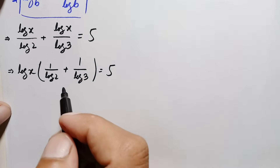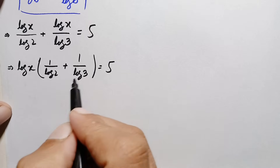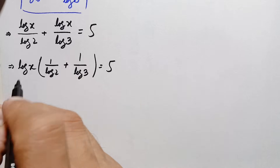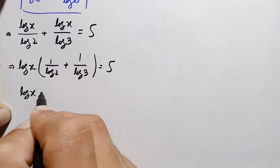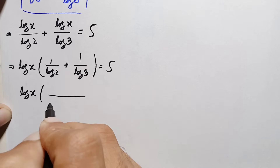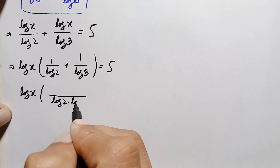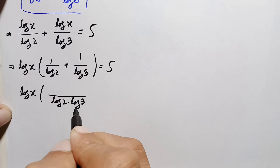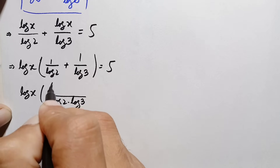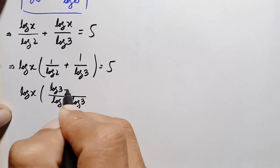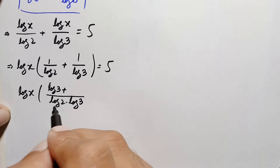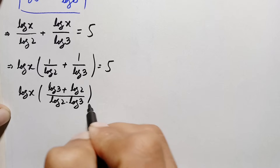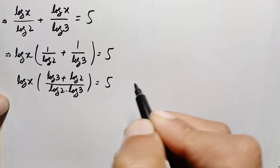We will sum up these two fractions. To add them, we take the common denominator, which is their product log 2 times log 3. So the left hand side becomes: log of x times (log of 3 plus log of 2) divided by (log of 2 times log of 3), is equal to 5.